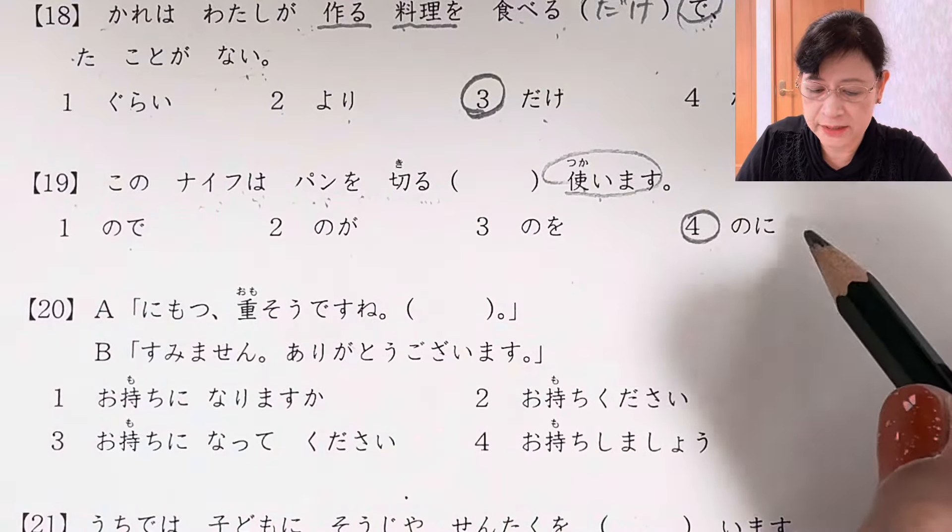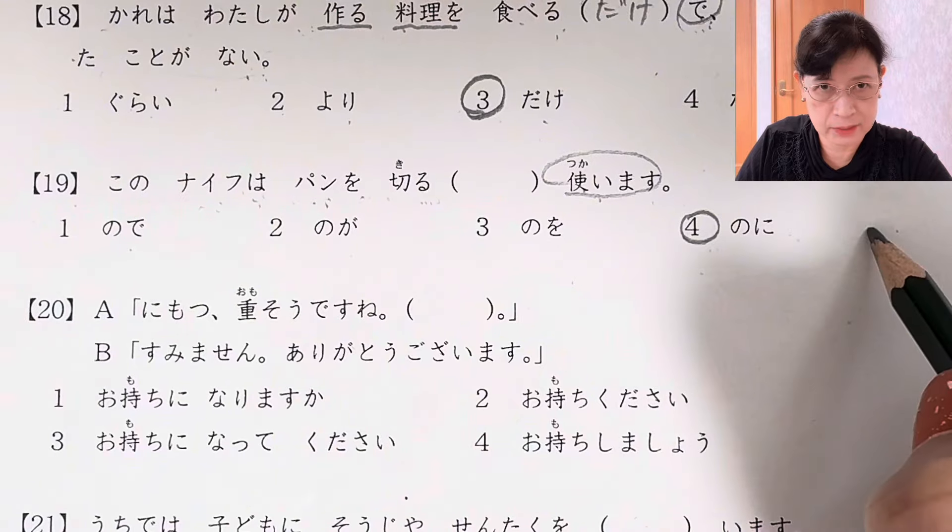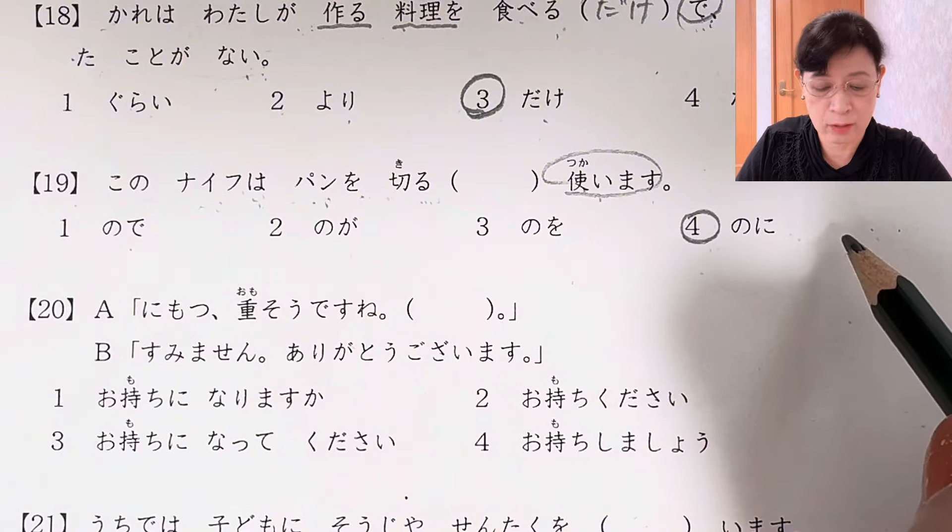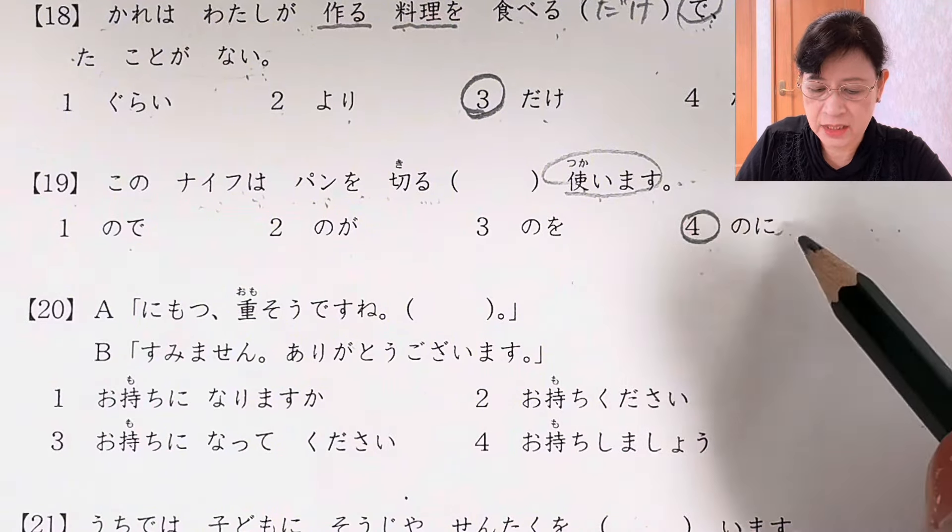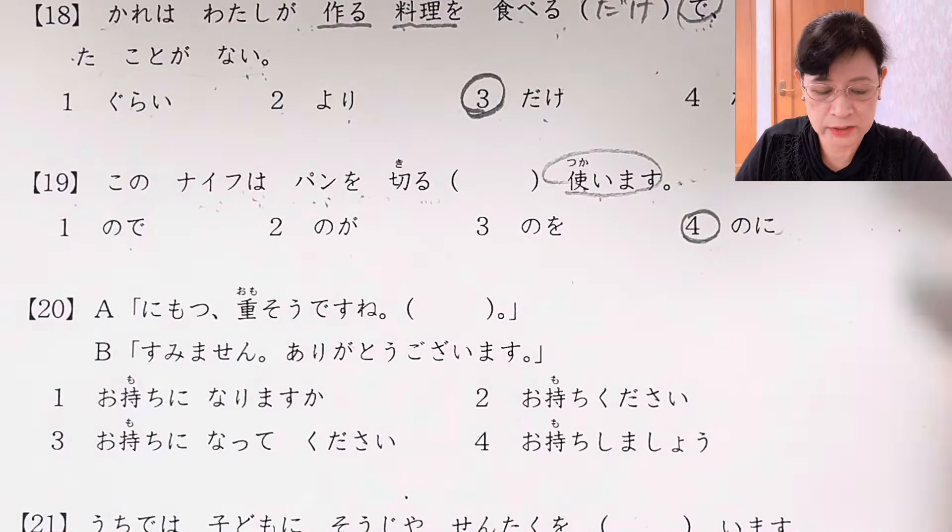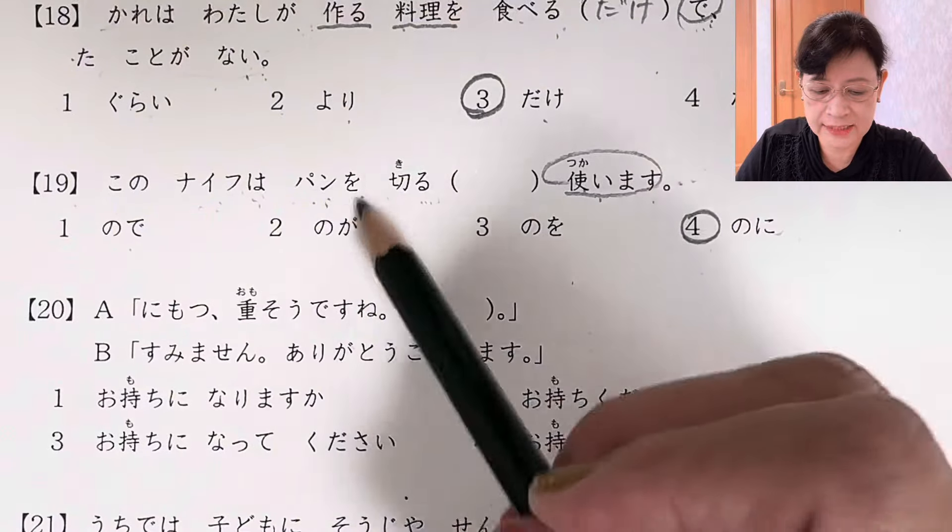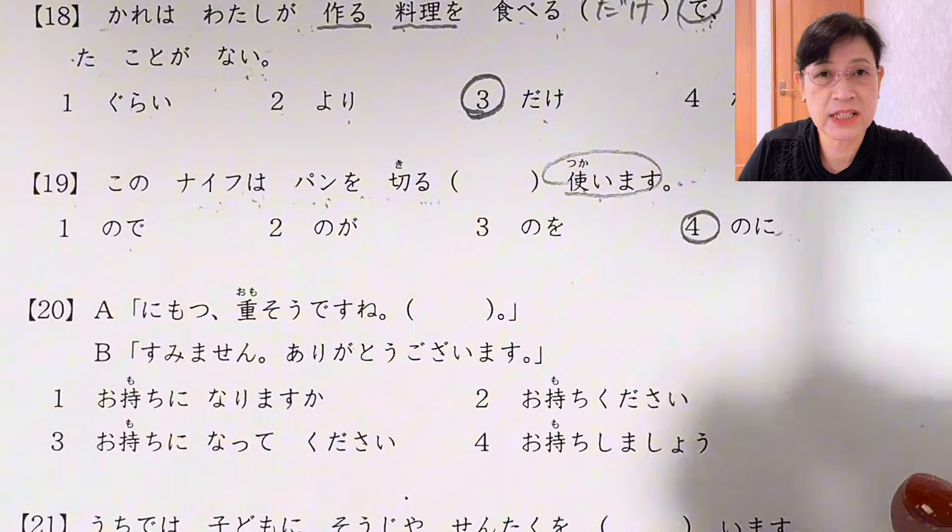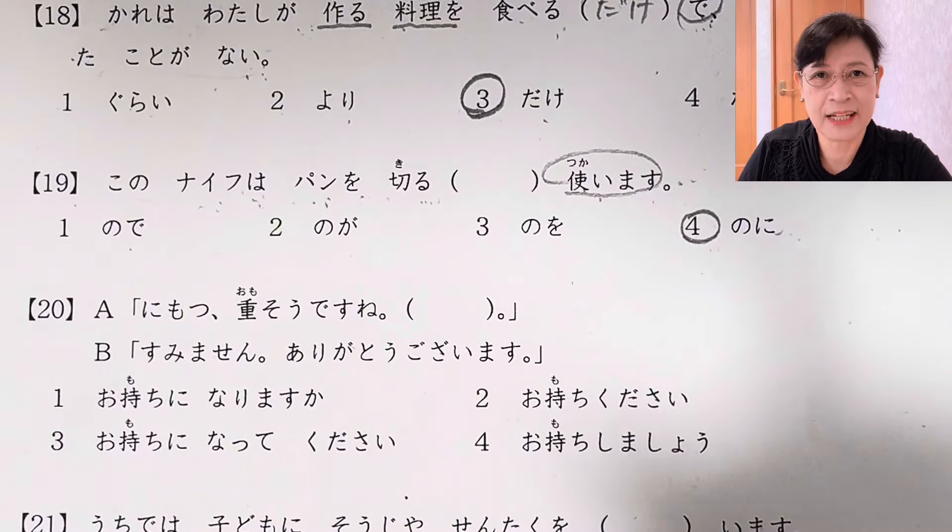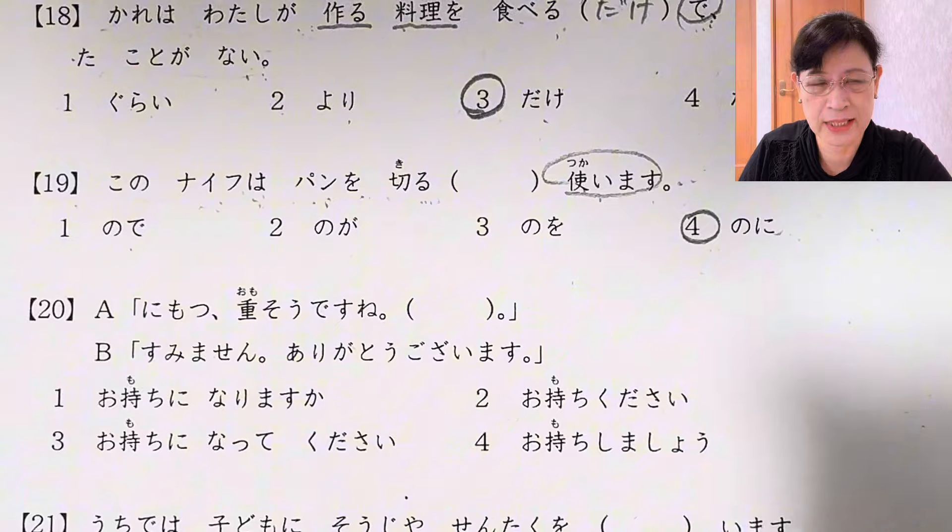Choices are ので、のが、のを、のに. The answer is のに. The sentence says このナイフはパンを切るのに使います - this knife is used to cut bread. To rephrase it, this knife is used for slicing bread. This のに means this is used for - it has a purpose. Another example: 友達に連絡するのにメールを送ります - in order to contact my friend, I send him mail.